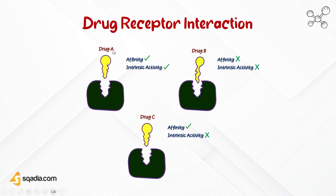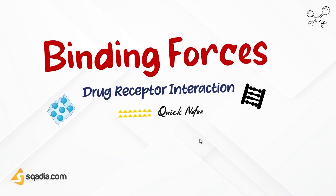Let's visualize these two terms. There are three types of drugs: drug A, which can bind with the receptor and produces an action — drug A has both affinity and intrinsic activity. Drug B cannot bind to the receptor due to structural differences and therefore produces no action — drug B lacks both affinity and intrinsic activity. Lastly, drug C can bind to the receptor but produces no action — drug C has affinity for the receptor but no intrinsic activity.